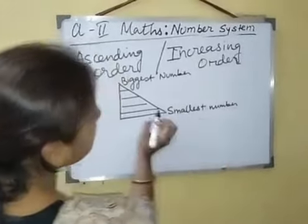For example: 100, 200, 300, 400. The smallest number here is 100, and then we are moving gradually to the biggest number, which is 400. This is ascending order.